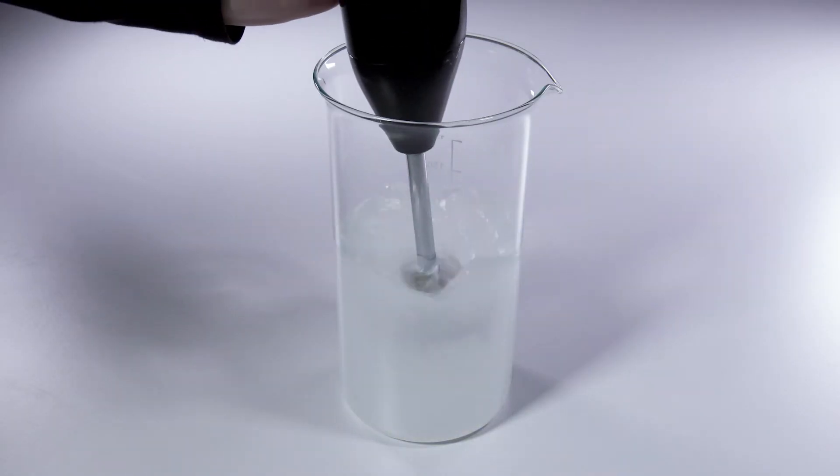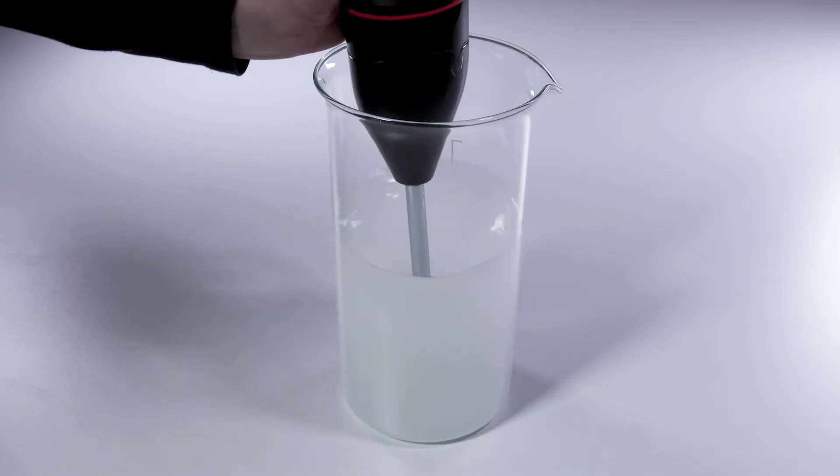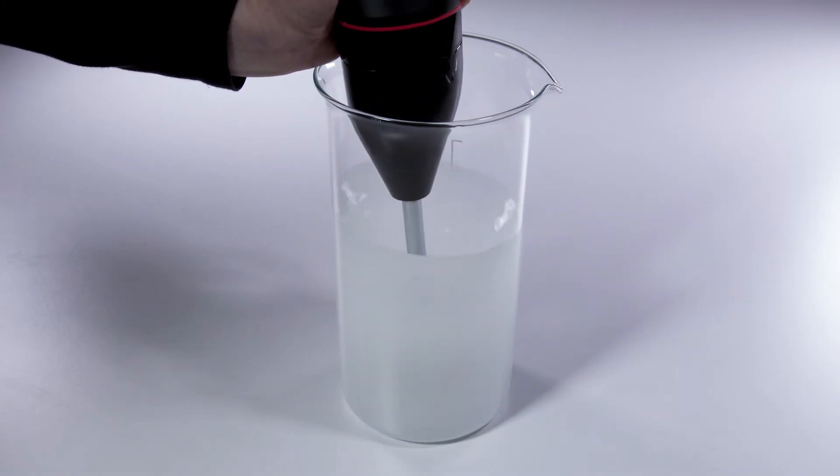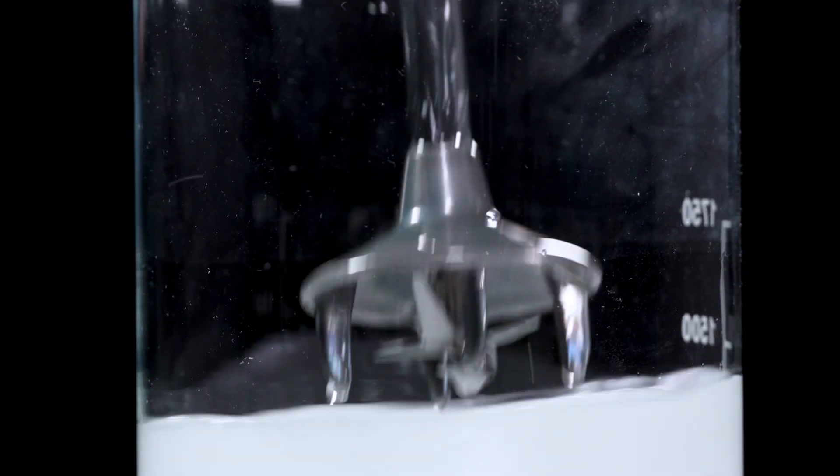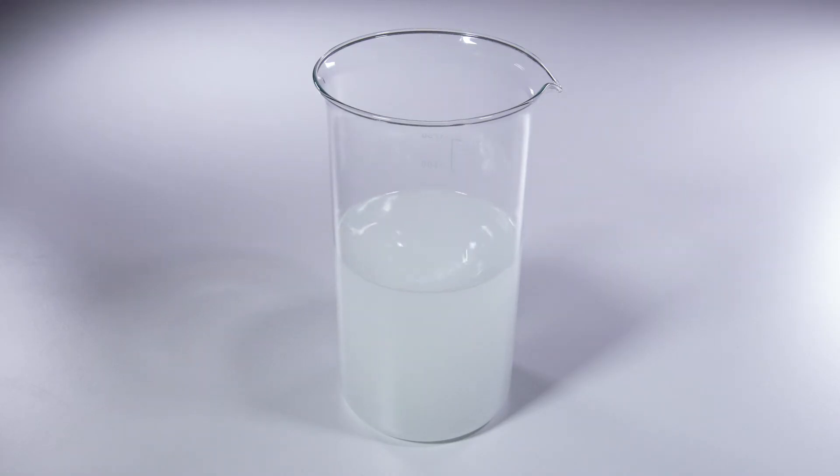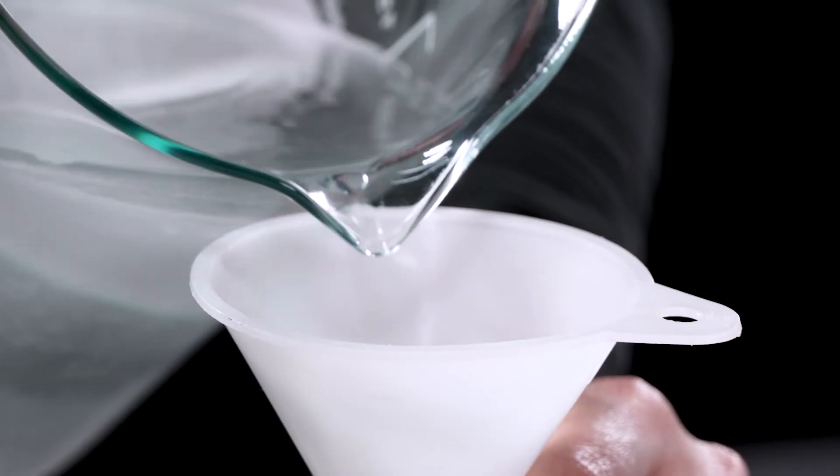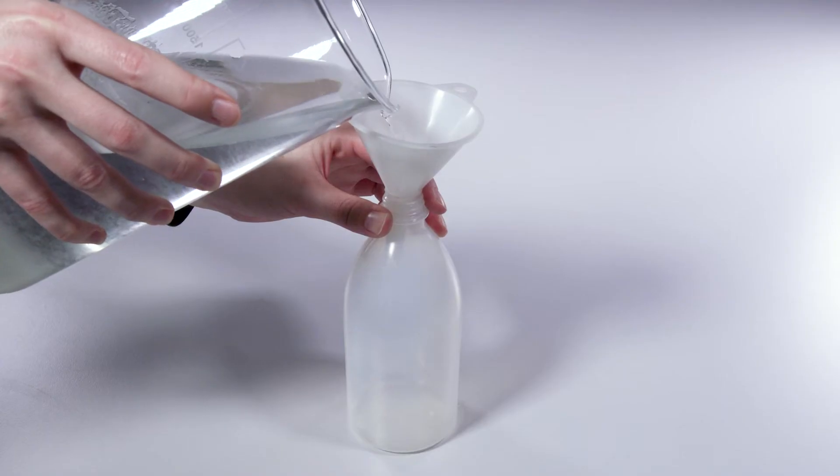After soaking, a mixer is used to create a homogenous mixture. The blades of the mixer should be blunt so that they do not shred the fibers but rather mix them. The fiber suspension is then poured into an infilling bottle.